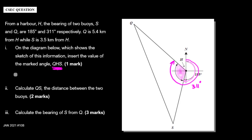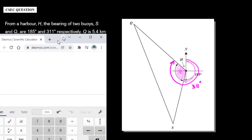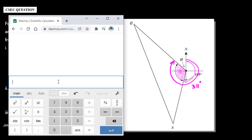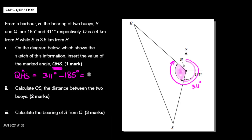Angle QHS is going to be equal to 311 degrees minus 185 degrees. If I put that in my calculator — well you don't really have to, but I'll do it here — that's 126 degrees. So angle QHS is 126 degrees.